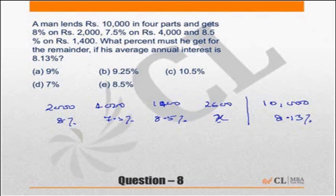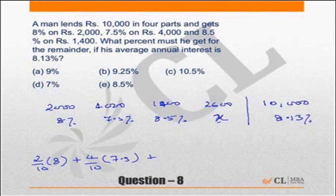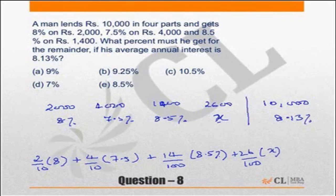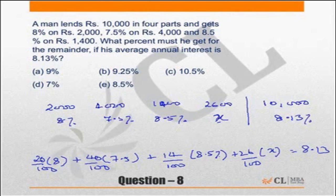Which means out of the total 10,000, 2 out of 10,000 the rate of interest is 8%. On 4 out of 10,000 the rate of interest is 7.5%. On 1.4 out of 10, the rate of interest is 8.5% and on 2.6 out of 10 the rate of interest is x, which equals 8.13%. So this will be a question which expects you to solve. You've got to make your life a little easier by making 20 by 100 and 40 by 100 also and get the answer. This is a straightforward question of weighted average. These are the kinds of questions that we tend to make mistakes, so be careful so that there are no errors.